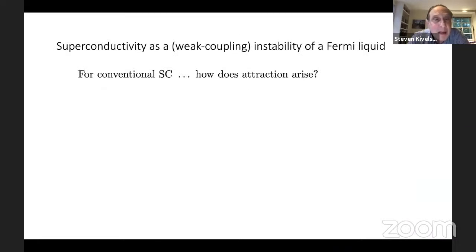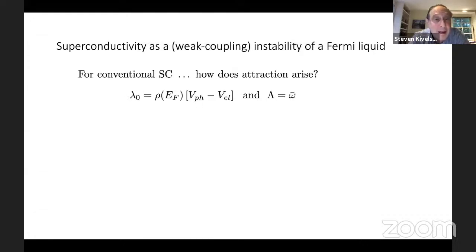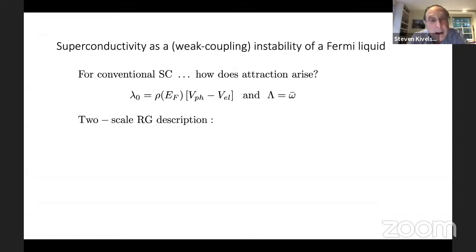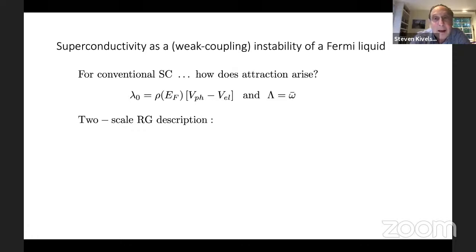That's the BCS theory. The question arises: how do these interactions that we enter into the BCS gap equation arise? For conventional superconductors, the issue is how attraction arises — the effective lambda is given by the difference between a phonon-induced attraction and a bare electron-electron repulsion. Generally, one would expect the repulsive interaction to be stronger, since electrons are like-charged. But this gets modified via a two-step renormalization group treatment: we integrate out states between E-Fermi and a cutoff at the typical phonon frequency.